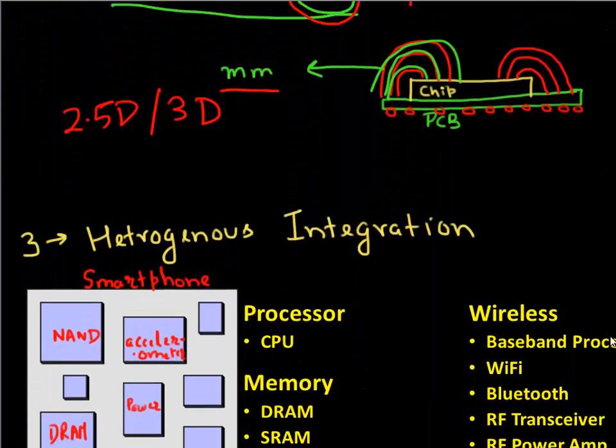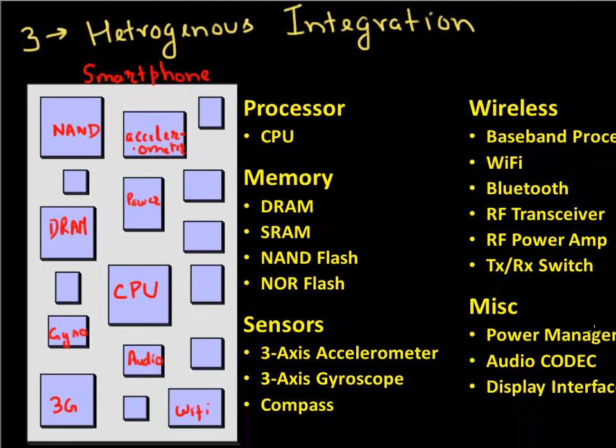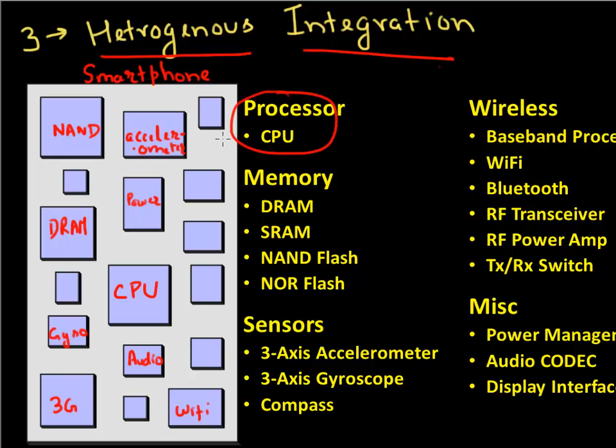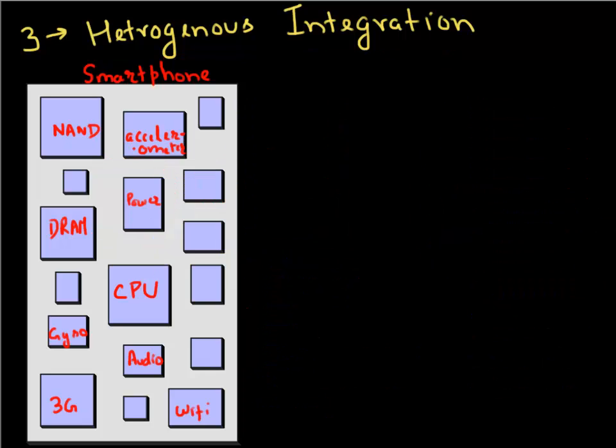Another factor which is driving this 2.5D or 3D trend is heterogeneous integration. If you open up your smartphone, you have different chips. You have a microprocessor, you have different kinds of memory, you have a DRAM, you have a NAND flash. You have different chips for doing wireless. So basically you have these different chips which are achieving different functionalities.